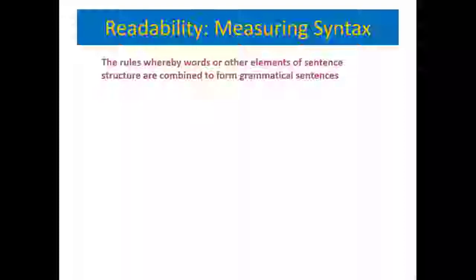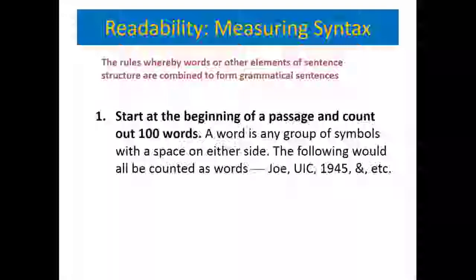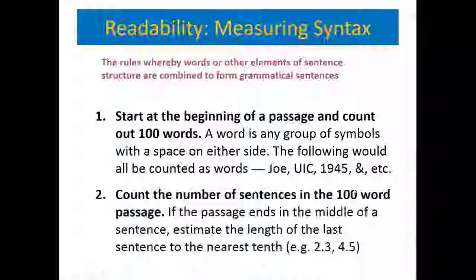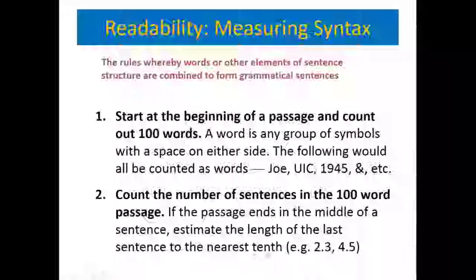Let's look at the Fry Readability and how we measure syntax. We'll use Fry because it has a visual graph. The instructions are to start at the beginning of the passage and count out 100 words. A word is any group of symbols with a space on either side — Joe, UIC, A, 1945, And, Etc. are all counted as words. Then you count the number of sentences in that 100-word passage. If the passage ends in the middle of a sentence, estimate the length to the nearest tenth — so about 2.3 or 4.5 sentences per 100 words.